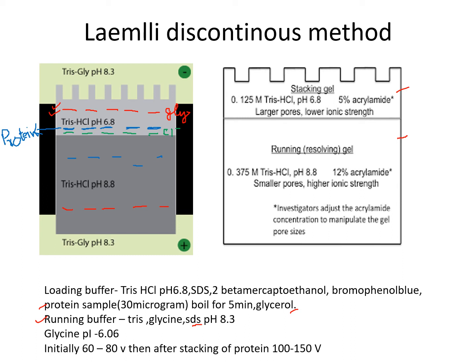Chloride ions from the Tris-HCl in the gel move at a faster rate because they carry negative charges. Chloride ions are called leading ions because they move faster, and glycine zwitterions are called trailing ions because they move slowest in the stacking gel. This creates a narrow steep voltage gradient where proteins will start stacking — concentrating at one level.